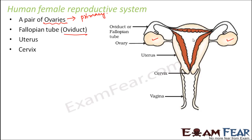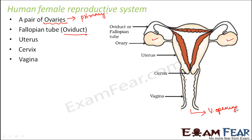Cervix is located towards the terminal end of the uterus, and this is followed by the vagina. If you see, this is the vaginal opening — an open space, which is the vaginal opening that opens to the exterior.